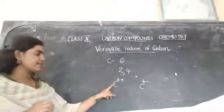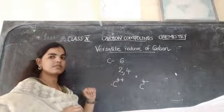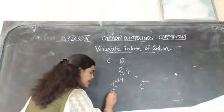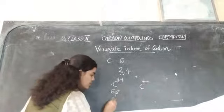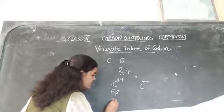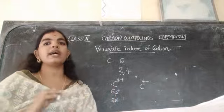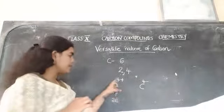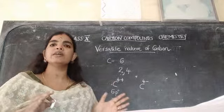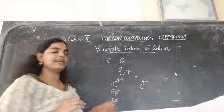Let us discuss the first case, that is the C4+ ion. Here, the carbon atom loses 4 electrons. So after losing 4 electrons, it has 6 protons and 2 electrons remaining. In order to release electrons, a high amount of energy is required. So in the case of carbon, you have to release 4 electrons, which requires a very high amount of energy, and that is not possible for a small atom like carbon.